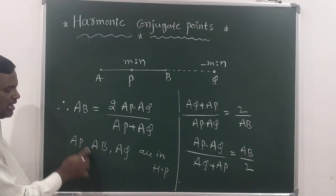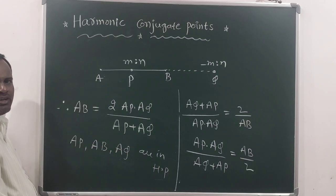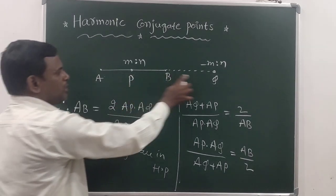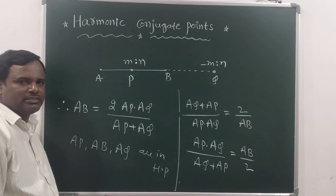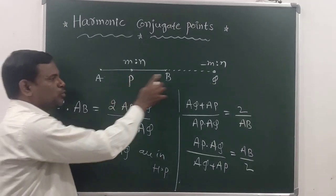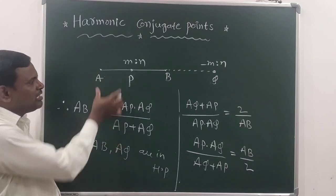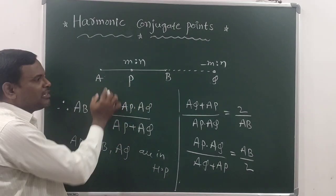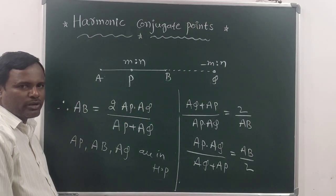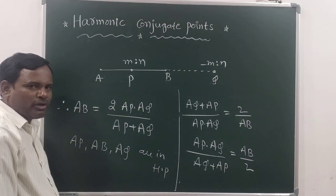In these three, the middle one, AB, is called the harmonic mean of AP and AQ. Hence we say that P and Q are called harmonic conjugate points. The reason is that the lengths AP, AB, and AQ form a harmonic progression.